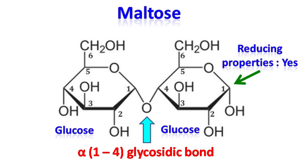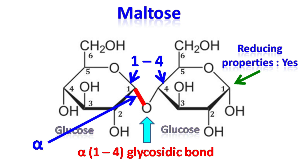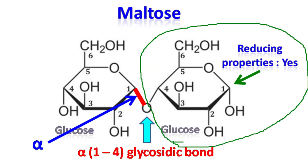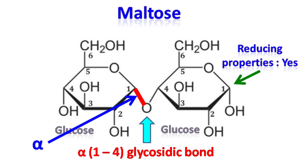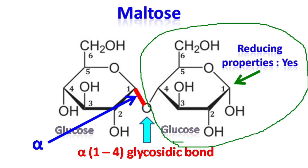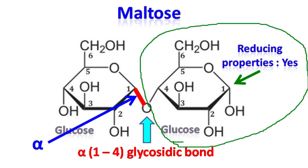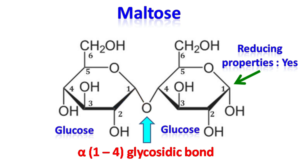Maltose is formed by two molecules of glucose linked together by an alpha 1-4 glycosidic bond. The second molecule of glucose still has a free aldehyde group, which gives maltose its reducing properties.